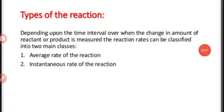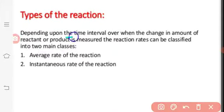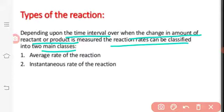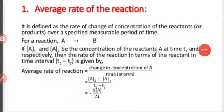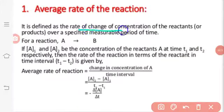Now, what are the types of rate of reaction depending on the time interval? Depending upon the time interval when the change in the amount of reactant and product is measured, the rate of reaction can be classified into two main classes: first is average rate of reaction, and second is instantaneous rate of reaction. The average rate of reaction is defined as the rate of change of concentration of reactant or product over a specified measurable period of time.